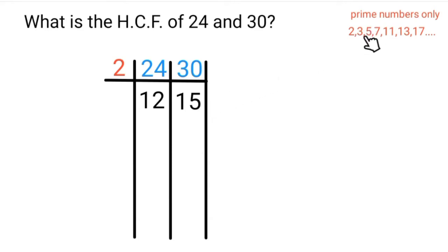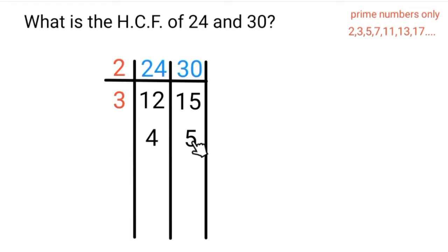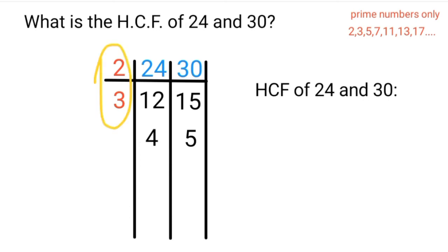So we move to our next prime number, which is 3. Can 3 go into 12 without leaving a remainder? Yes. Can 3 go into 15 without leaving a remainder? Yes. So we can use 3. 3 into 12 goes 4 times and 3 into 15 goes 5 times. We're now at a stage where we can't find a common prime number that goes into both 4 and 5, so we stop here. Our next step is to multiply the prime factors we used: 2 multiplied by 3 equals 6, which is the HCF.